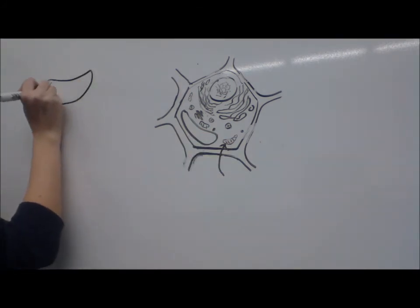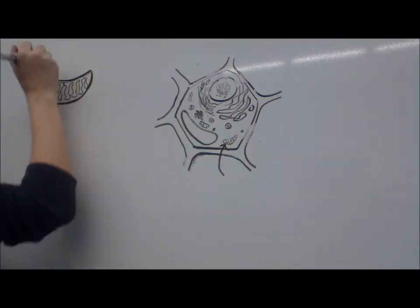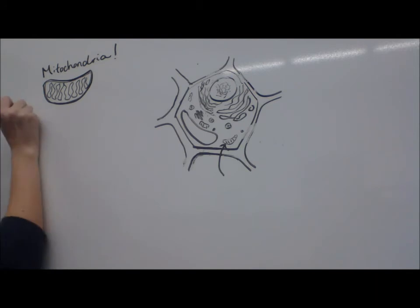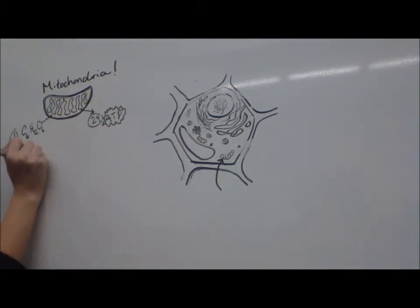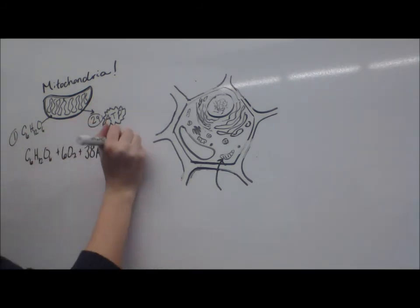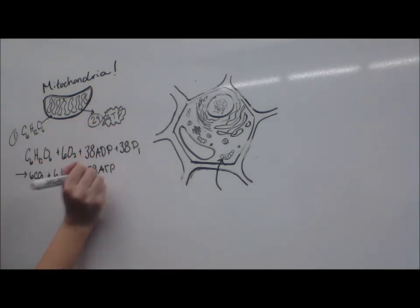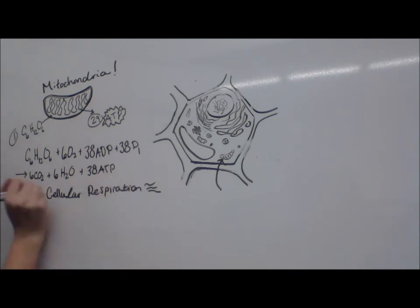The mitochondria makes my energy. Start with the glucose, make 29 ATP. Aerobic or anaerobic, it still arrives.